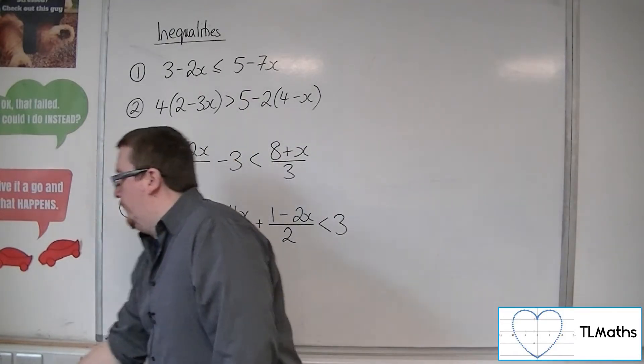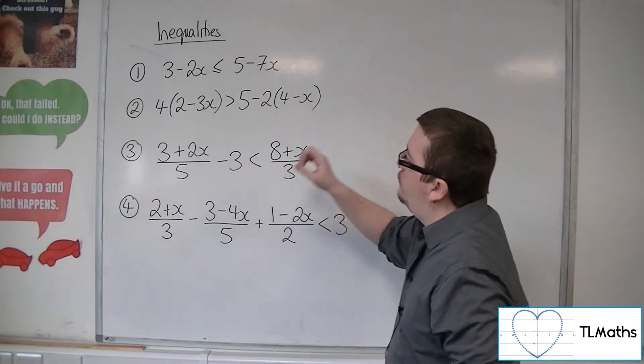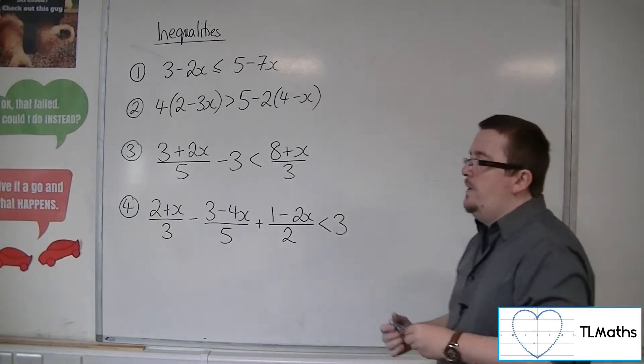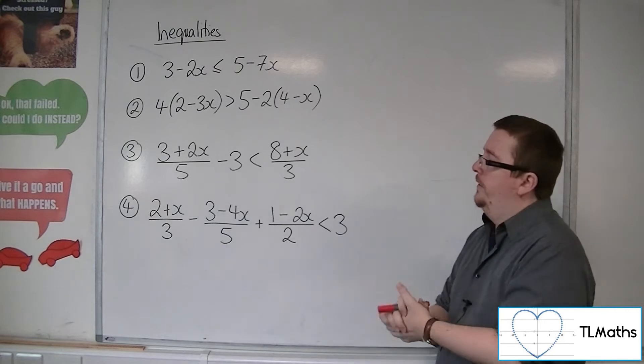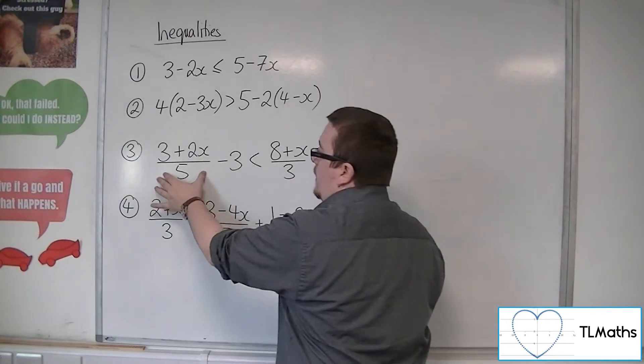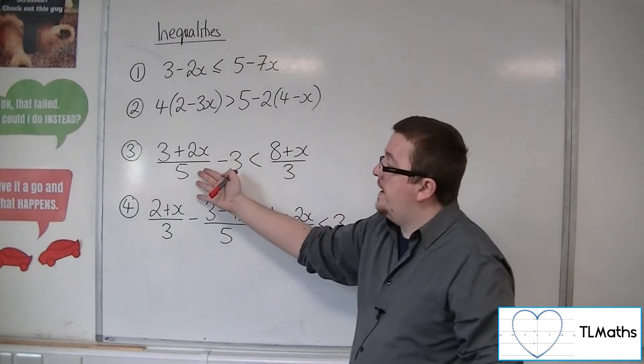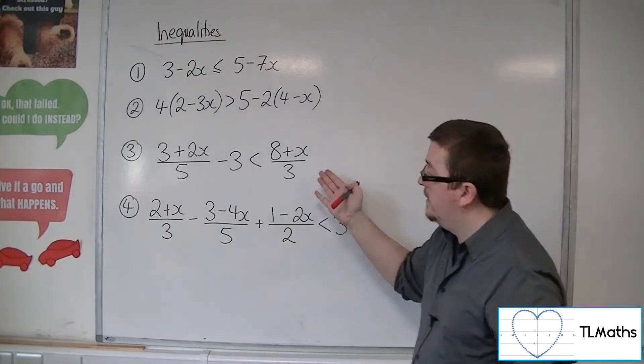So now we're going to start dealing with fractions. We've got 3 plus 2x over 5, take away 3 is less than 8 plus x over 3. So really what you want to do is you want to get rid of the fractions. So I'm going to multiply everything by 5 so that I get rid of this fraction here. I've got this fraction over here as well. I could multiply everything through by 3 first if I like.